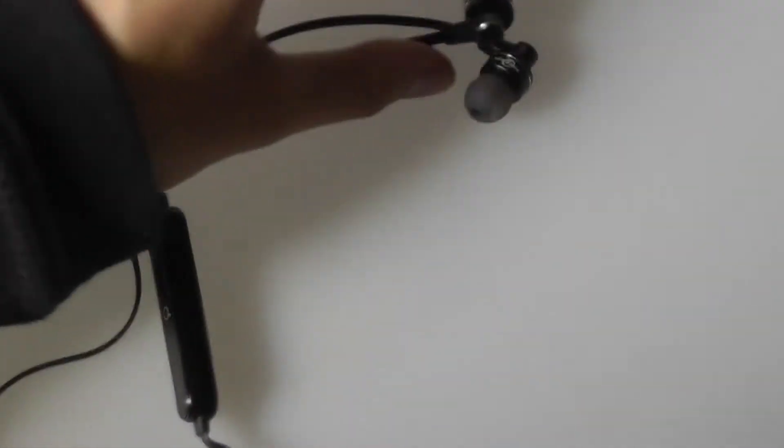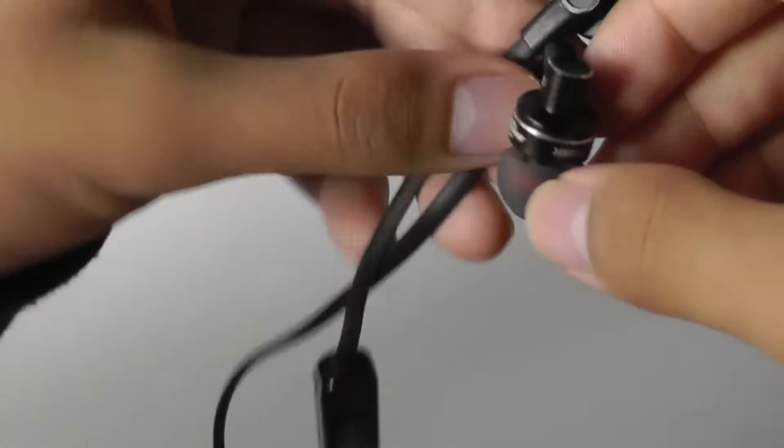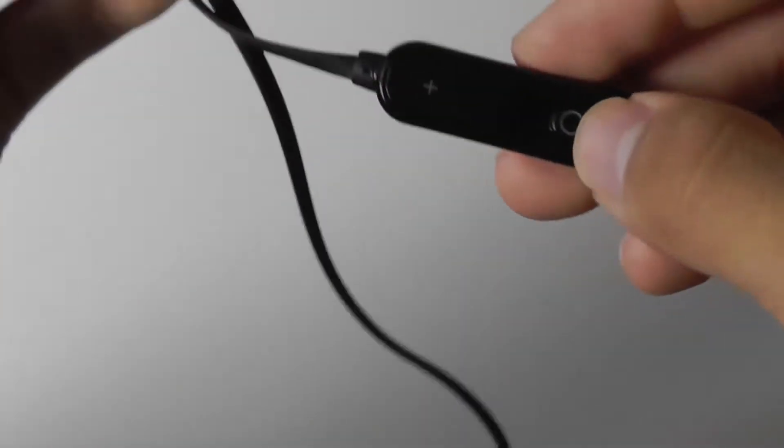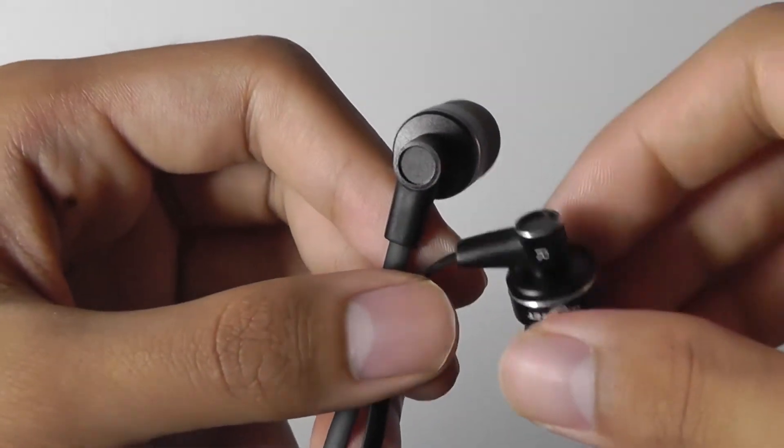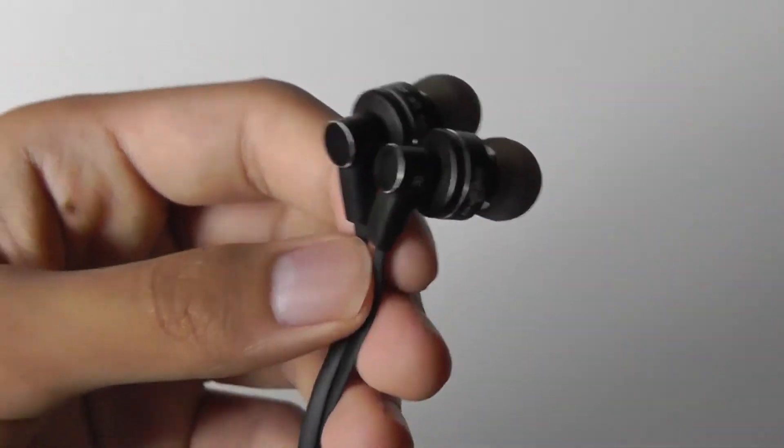There is also the ability for you to use the center key here as a shutter key for taking pictures with an Android smartphone. You have to download an app first, and you can check out more details about that by reading the user manual.